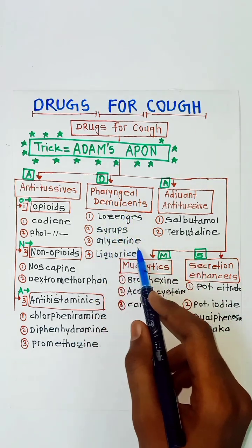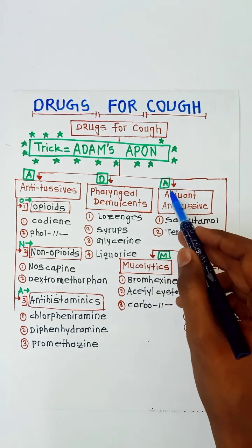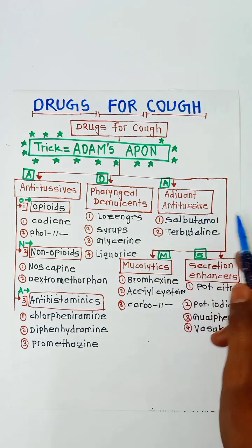Glycerine and licorice are also pharyngeal demulcents. Then adjuvant antitussives — these include bronchodilators.